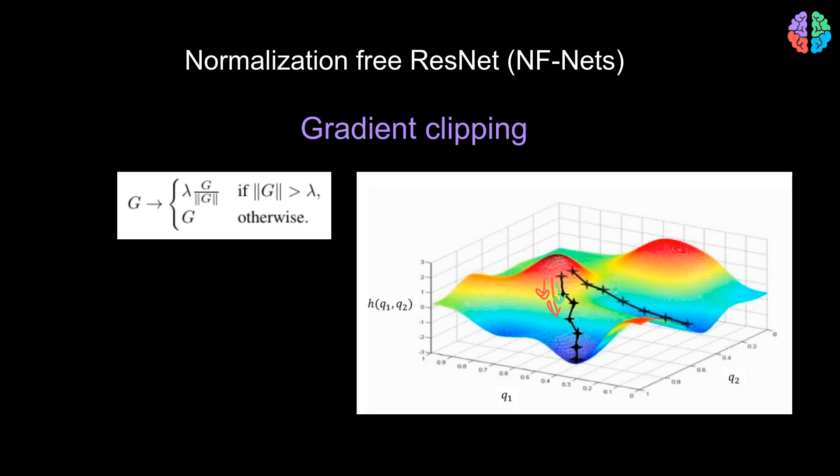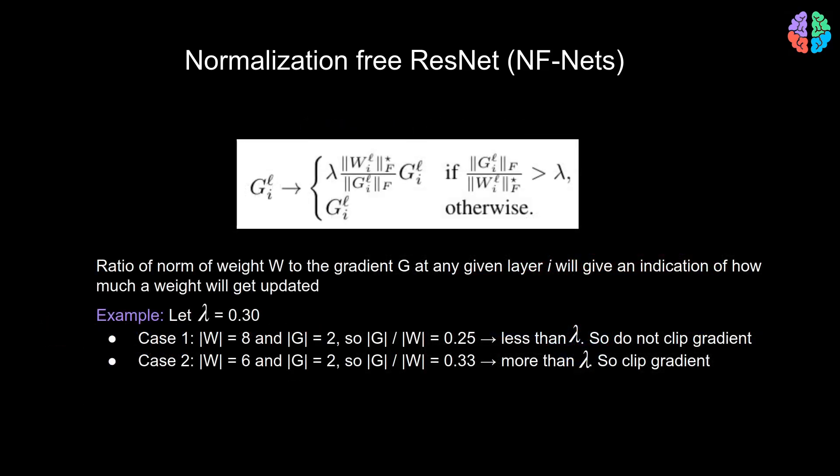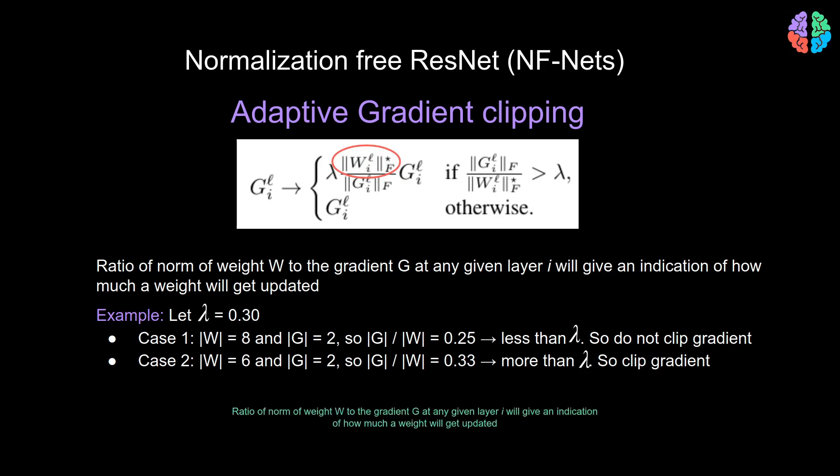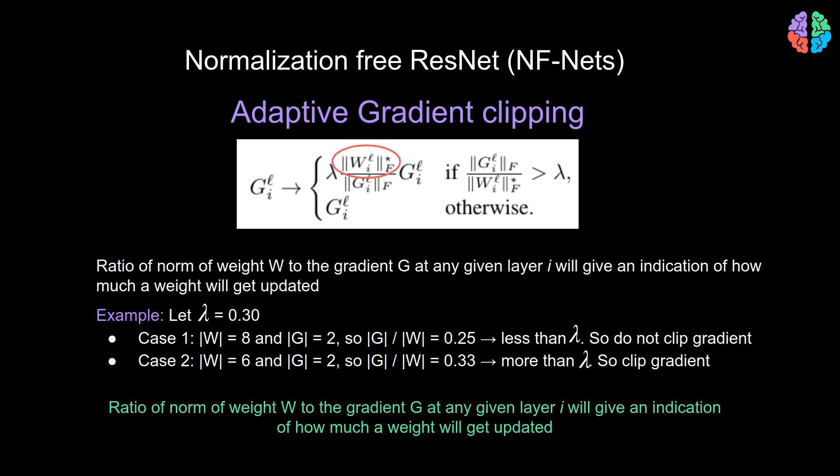Another problem I see with this is that the gradient clipping equation does not consider the weight itself. So irrespective of the weight or its magnitude, gradient clipping will simply clip the gradient and this is not very efficient. So NF-Nets introduces a modified version of this gradient clipping called adaptive gradient clipping. In this, the authors introduce the magnitude of the weight in the gradient clipping equation. The intuition is that for any given layer i, the ratio of the magnitude of the weight Wi and the magnitude of the gradient Gi gives an indication of how much the gradient will change.